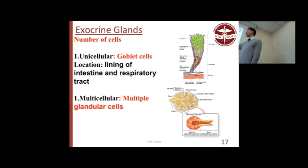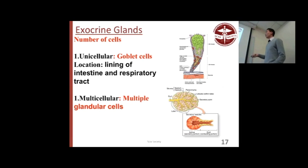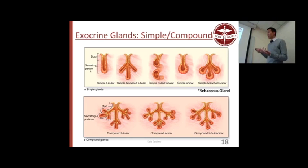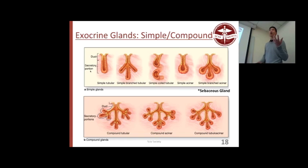Exocrine glands: unicellular versus multicellular. The only unicellular type you need to know is goblet cells — found in pseudostratified columnar and simple columnar. For multicellular: simple has one duct; compound has multiple ducts going into each gland. Know the difference between secretory cells and duct cells. She's not going to ask which is which from pictures since there are no pictures on the exam — she'll ask which is a simple branched acinar, for example, and an example is the sebaceous gland.